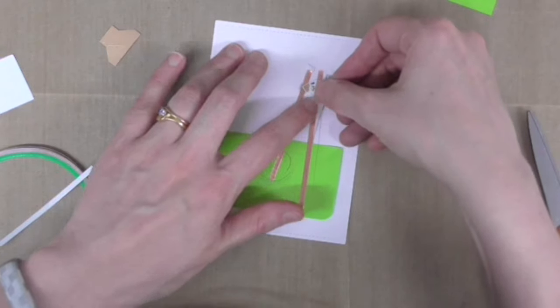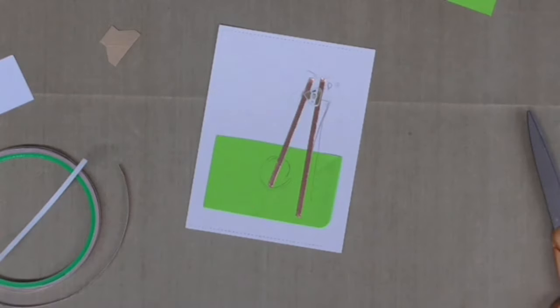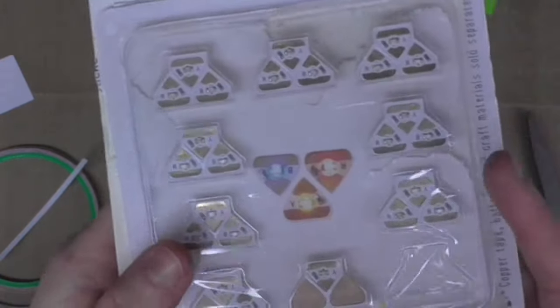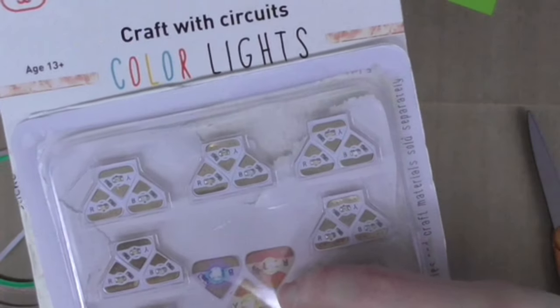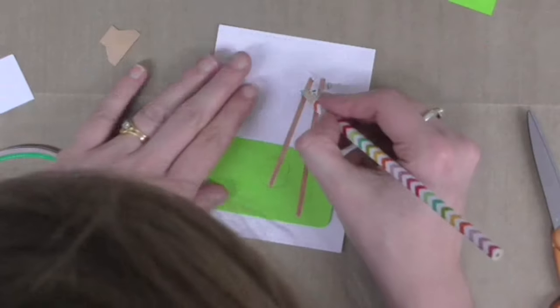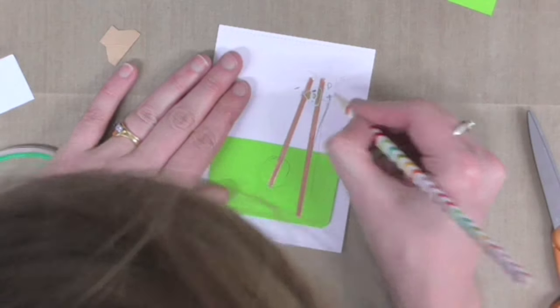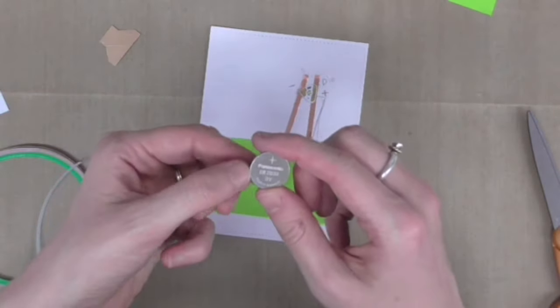So now I can stick my LED on top, once again making sure it's pressed down nicely. One important tip is that on the LED, one side is marked with a minus sign and the other with a plus. This is really important because this tells you which way around your battery should go.